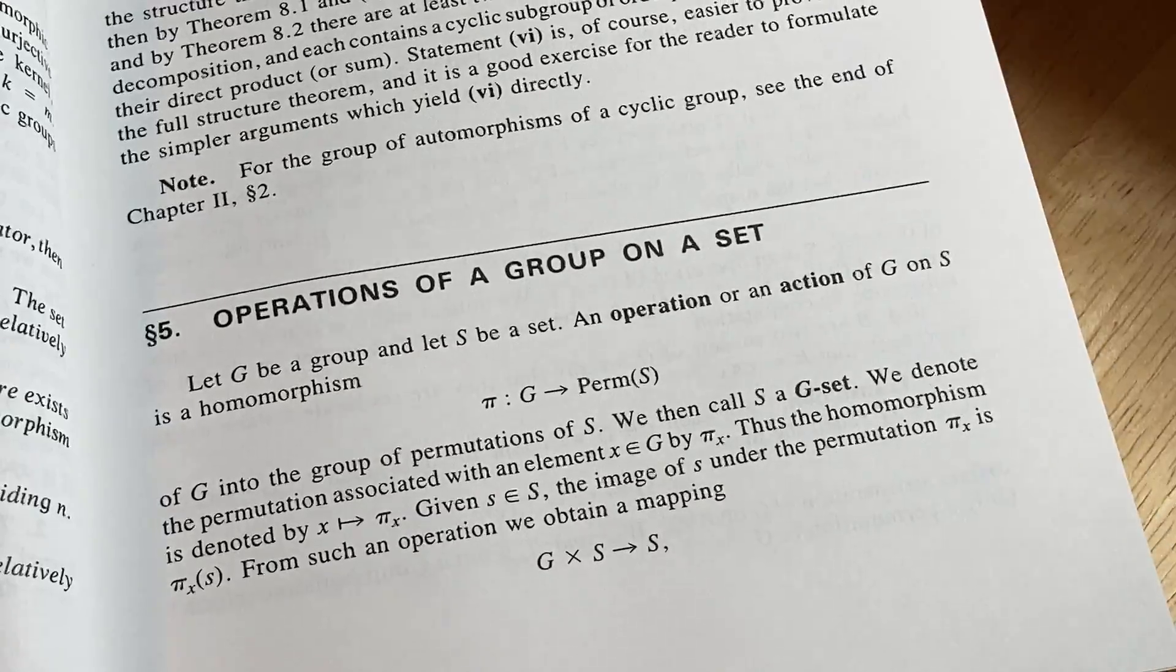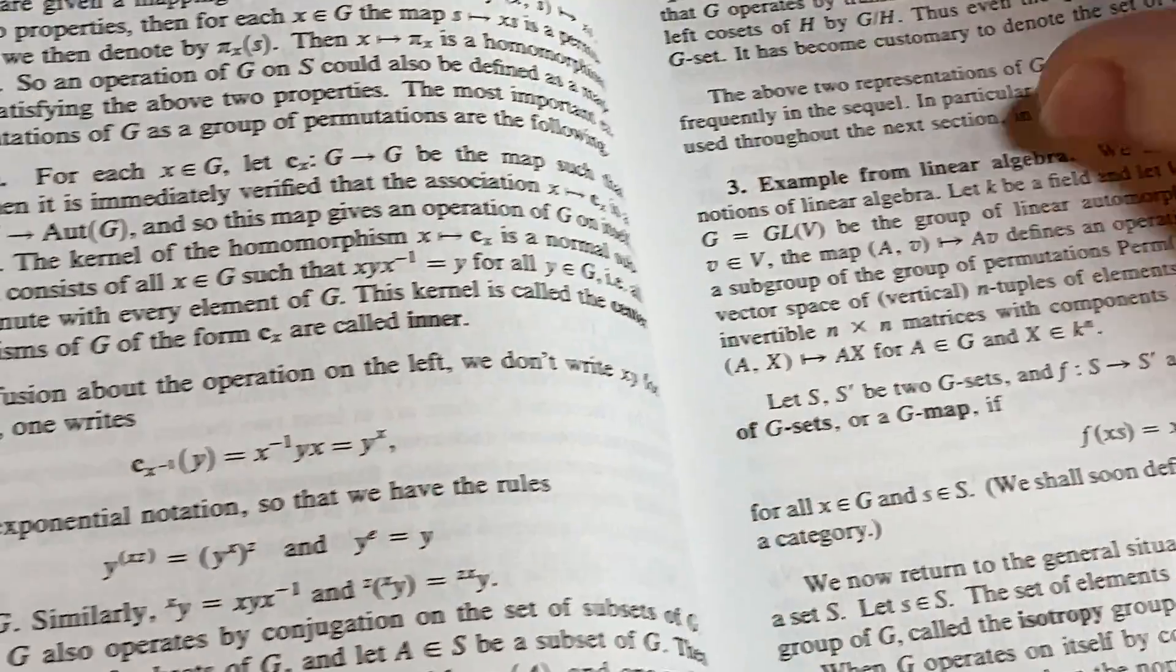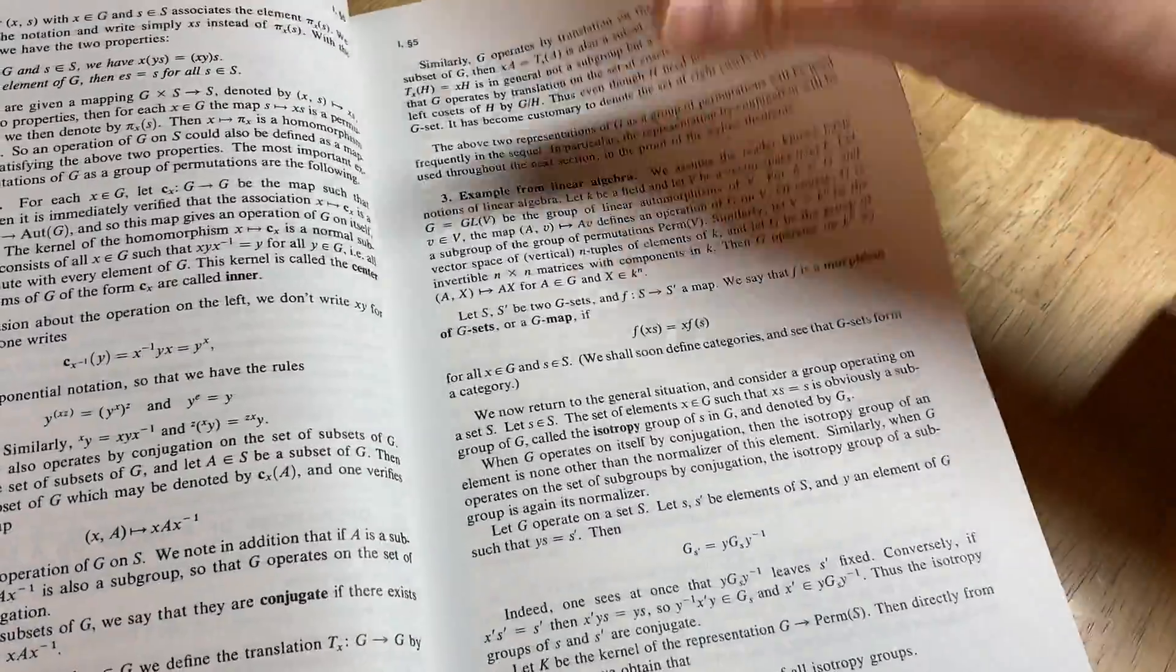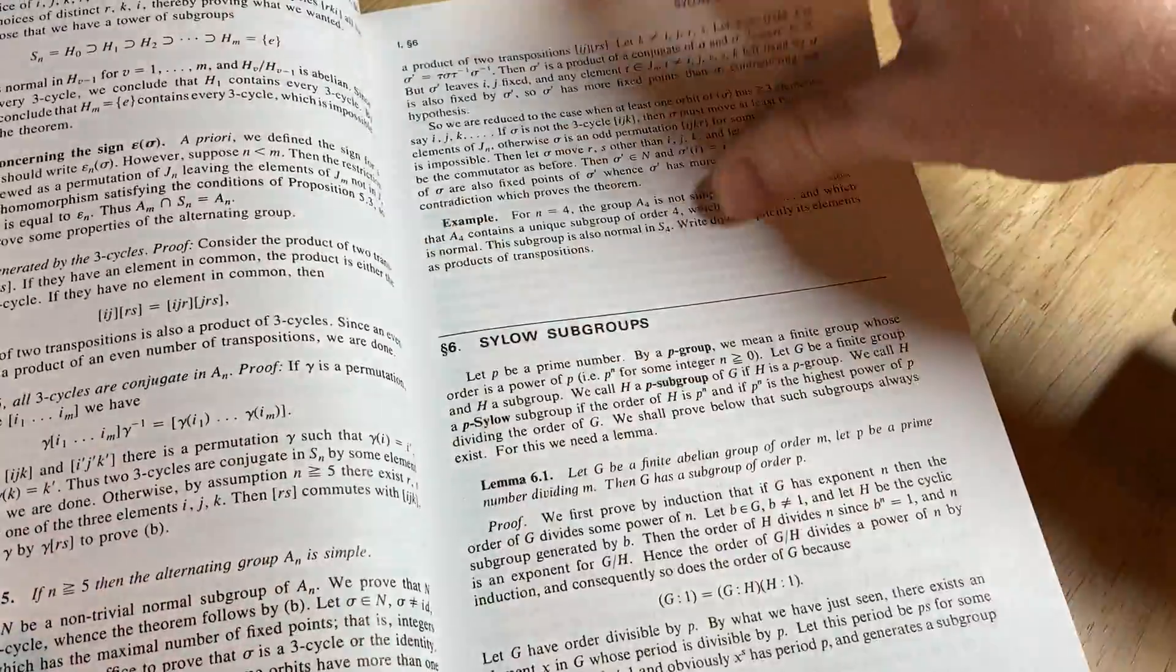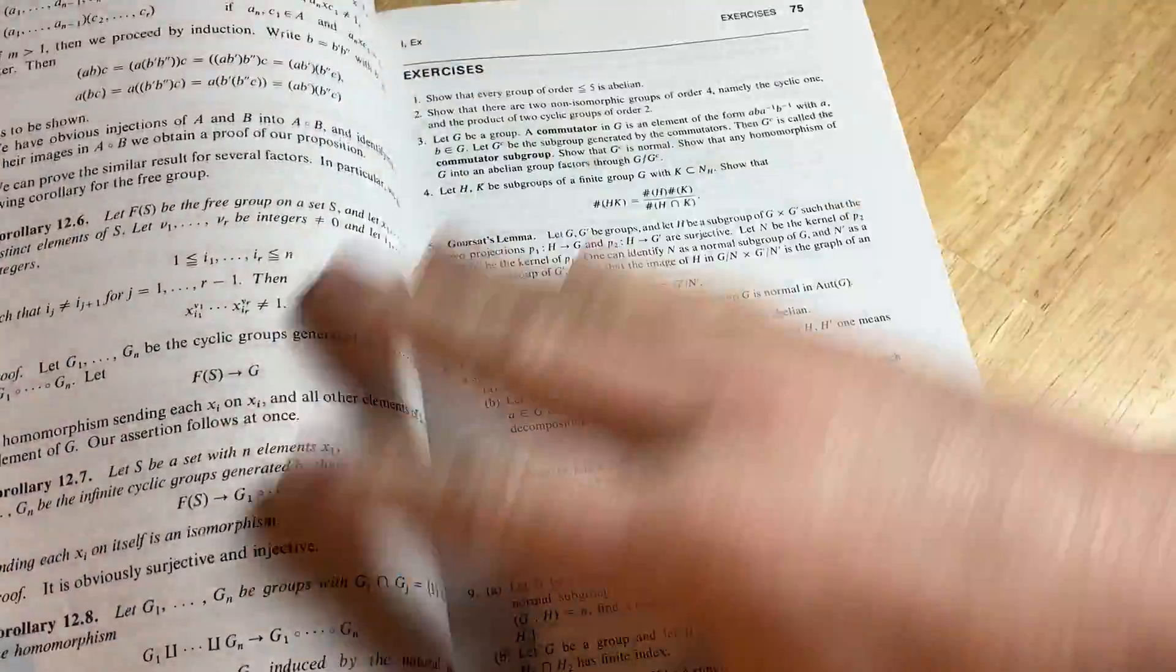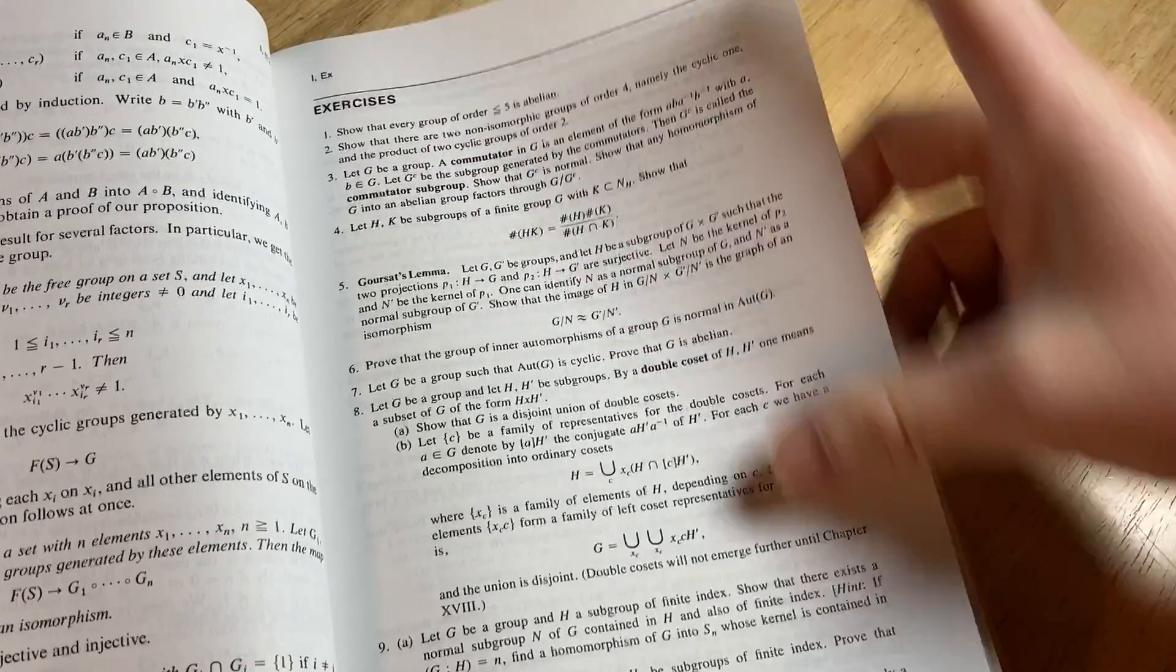We shall call S a G set. Cool. Conjugation. And let's go to the exercises. I guess they're at the very end of the chapter. Here we go. So one through 10 already.